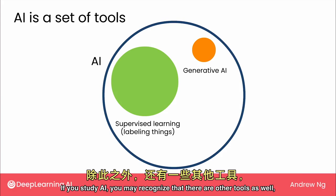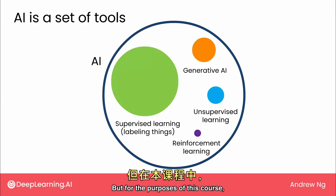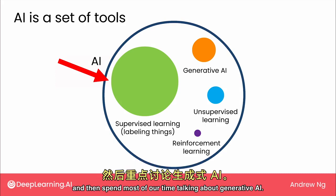If you study AI, you may recognize that there are other tools as well, such as things called unsupervised learning and reinforcement learning. But for the purposes of this course, I'm going to touch briefly on what is supervised learning and then spend most of our time talking about generative AI.